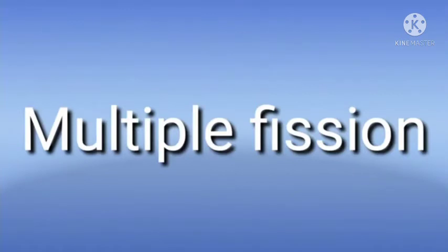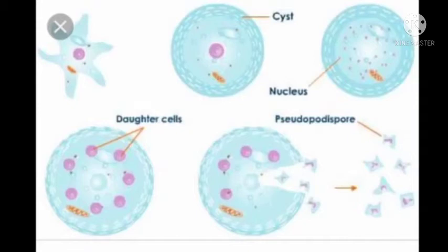Clearly you can see multiple fission. This multiple fission, you can see, whenever Amoeba finds unfavorable conditions, it absorbs its pseudopodia and forms a round cyst-like structure around its body.